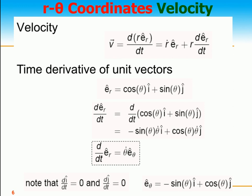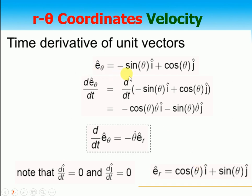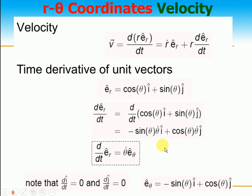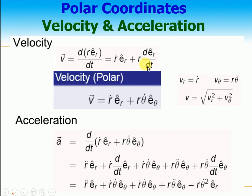Since d(i)/dt and d(j)/dt are zero as they are constant, we have d(er)/dt = θ̇ · eθ. Similarly, e-theta = −sin θ · i + cos θ · j. Taking the time derivative d(eθ)/dt gives −cos θ · θ̇ · i − sin θ · θ̇ · j. Taking negative common: −θ̇(cos θ · i + sin θ · j) = −θ̇ · er. So d(eθ)/dt = −θ̇ · er.